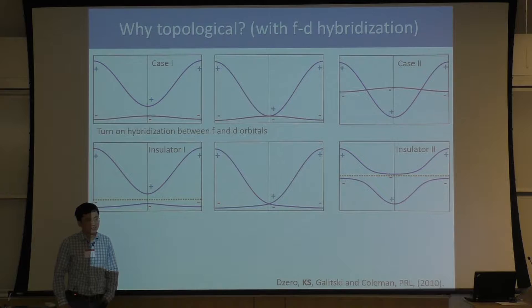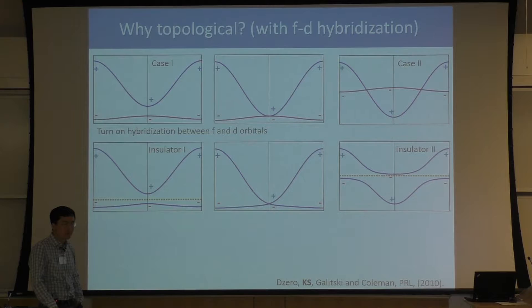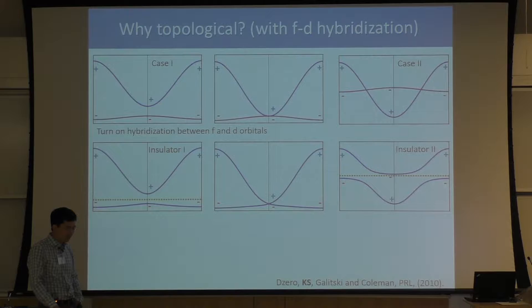We have said that the two insulators can transition into each other only through a phase transition, which means the gap closes. This is not a phase transition in Landau's sense — it is a topological phase transition, a quantum phase transition. Insulator 1 and insulator 2 have exactly the same symmetry; there is no spontaneous symmetry breaking.